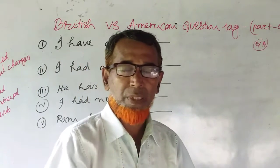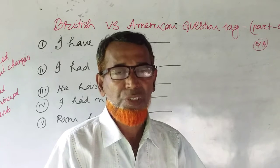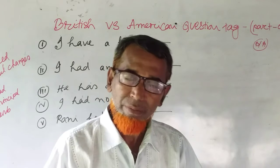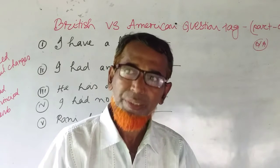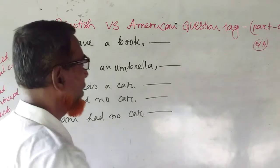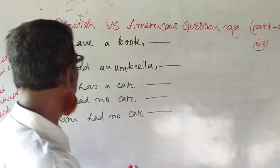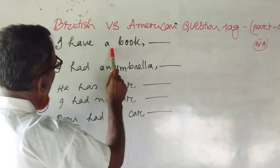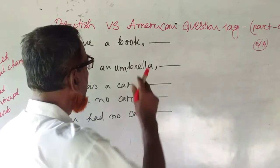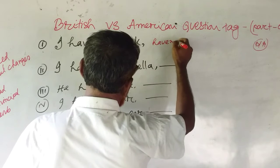We are going to discuss the question tags of British and American English. In British English, for a statement like 'I have,' how do you form the question tag? Should I say 'haven't I' or 'don't I'?